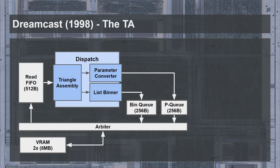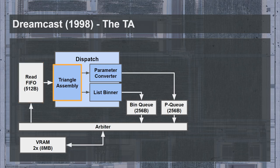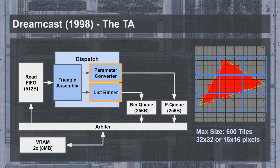We can begin with the Tile Accelerator, responsible for parameter conversion and binning. The display list written by the CPU into video memory is read into an input FIFO of approximately 512 bytes — enough for 128 words — which feeds into a triangle assembler. The triangle assembler breaks up large triangle strips into smaller ones: while the Dreamcast GPU could support infinitely long triangle strips, the underlying GPU core could only handle strips up to six triangles long. This is also where other primitive types were transformed into simpler primitives. The simplified primitives then pass through a parameter converter that unified the display list format for the GPU core to later process, and this is also where triangle binning occurs.